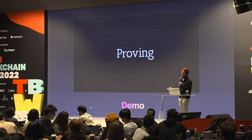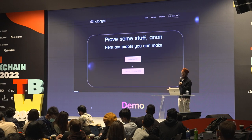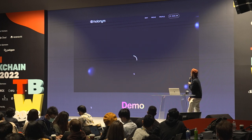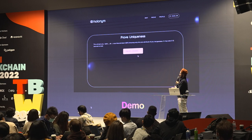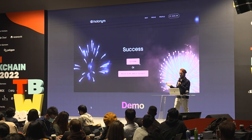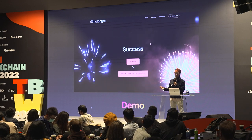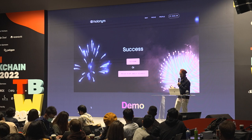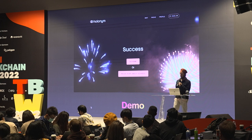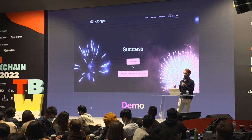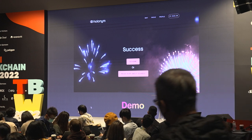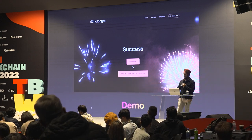After you've minted your Holonym, you can prove facts about yourself. The facts we currently support include unique personhood and US residency. For example, if you want to claim an airdrop and don't want bots to game it, you can prove you're a unique person. This also applies to quadratic voting or DAOs that use one-person-one-vote instead of one-token-one-vote.